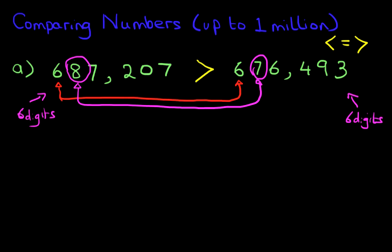Therefore, this is the symbol we put in between them. The arrow, the yellow arrow, always points to the smaller number.